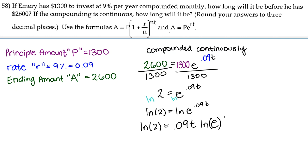Now, the ln of e is just 1, so that's going to be 1 times 0.09t. So now we're going to divide each side by 0.09, and that's going to give us that t is equal to the ln of 2 over 0.09.